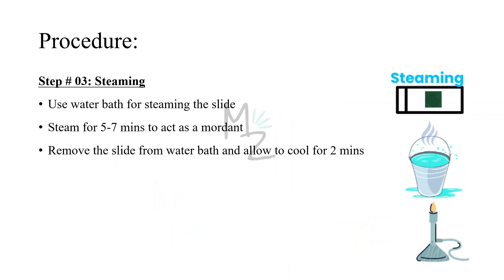Step three is steaming. As the slide is placed on the water bath, we'll turn on the burner and heat the water bath to steam the slide for five to seven minutes — this steam acts as a mordant, enhancing the binding of the dye or stain. Then we'll remove the slide from the water bath with forceps, since the slide is hot, and allow it to cool for two minutes.